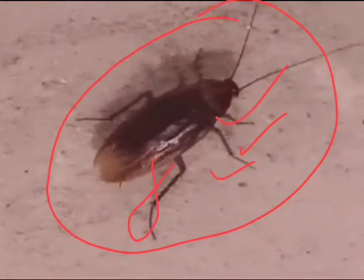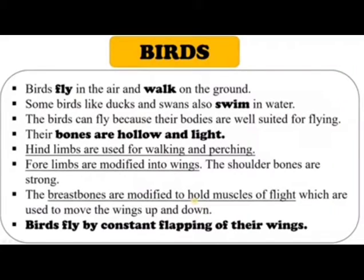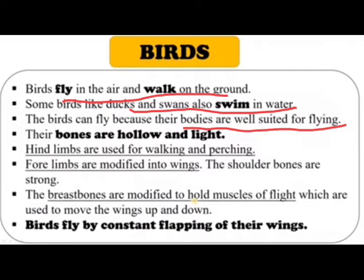Next is the movement of birds. Birds fly in the air and walk on the ground. Some birds, like ducks and swans, also swim in water. Birds can fly because their bodies are well suited for flying — their bones are hollow and light, which helps them stay airborne.